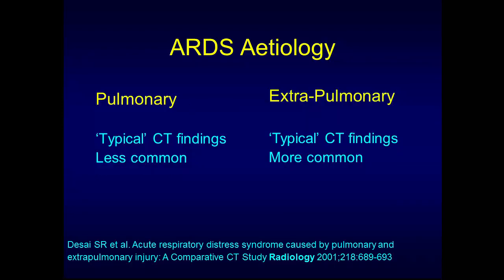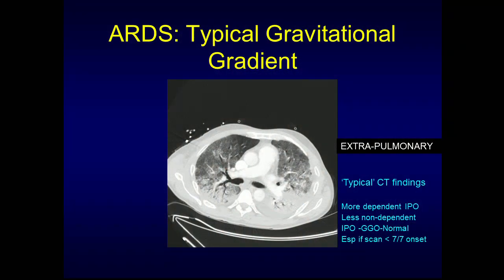We know through many studies that there's a pattern favoring an extra-pulmonary insult and a pattern favoring a pulmonary insult. Extra-pulmonary causes give us the more typical ARDS picture — a lovely gravitational look with reasonably normally aerated lung anteriorly, grading through ground glass to consolidation posteriorly. In that consolidation we get prominent but tapering airways going right out to the periphery, with a small pleural effusion. The other visible airways show no concerning knobbly appearance, so there's no real suspicion of fibrosis.